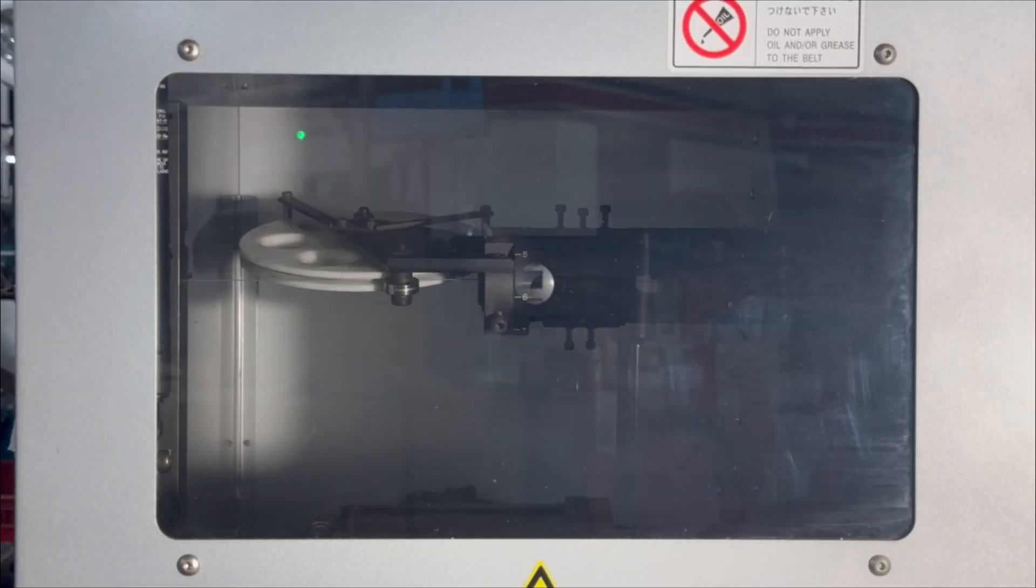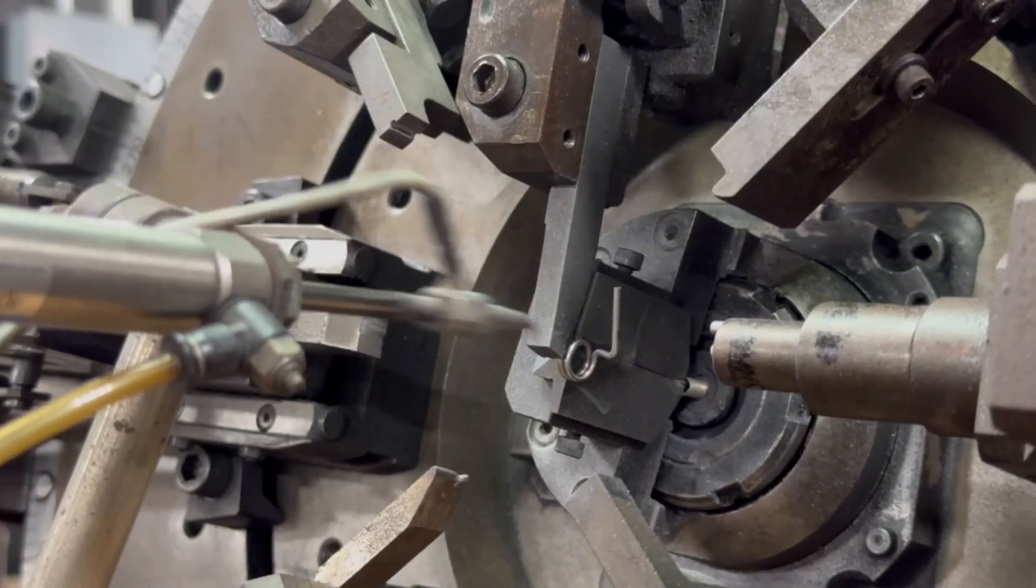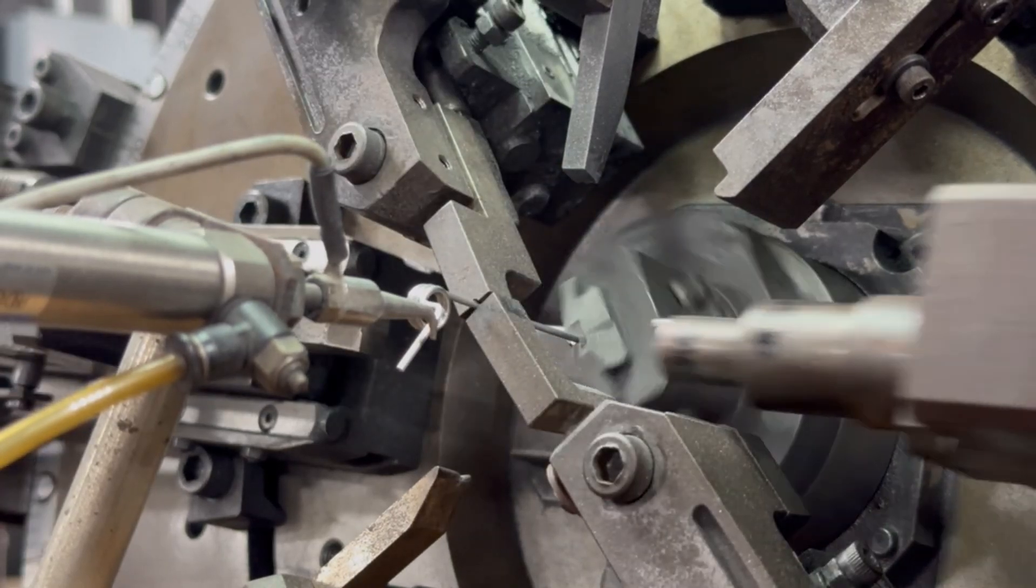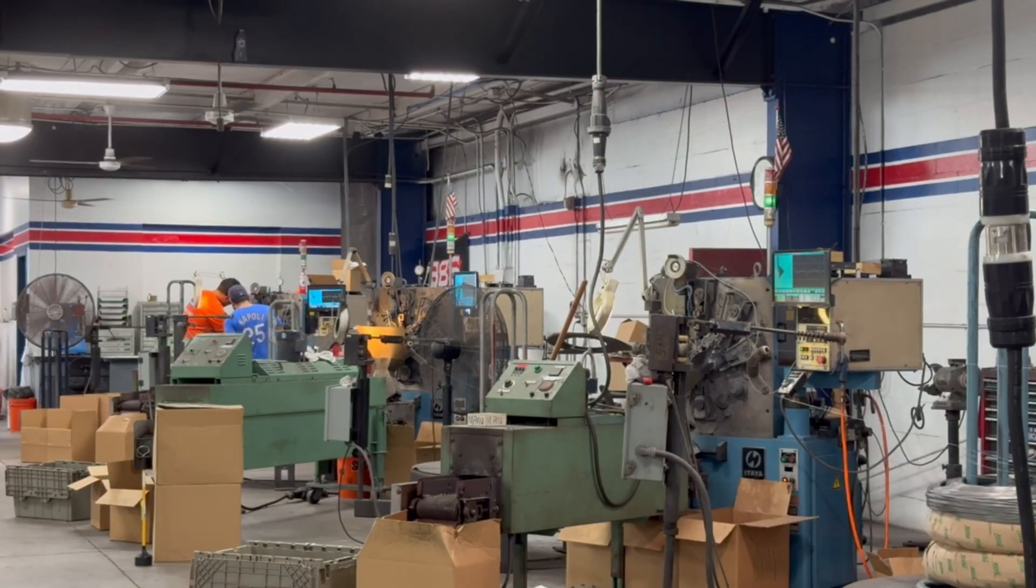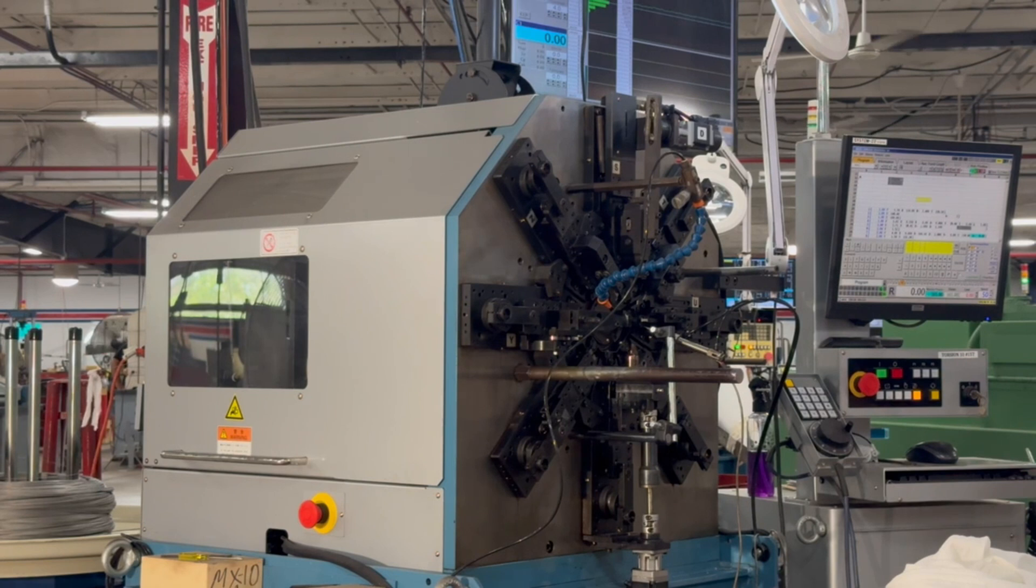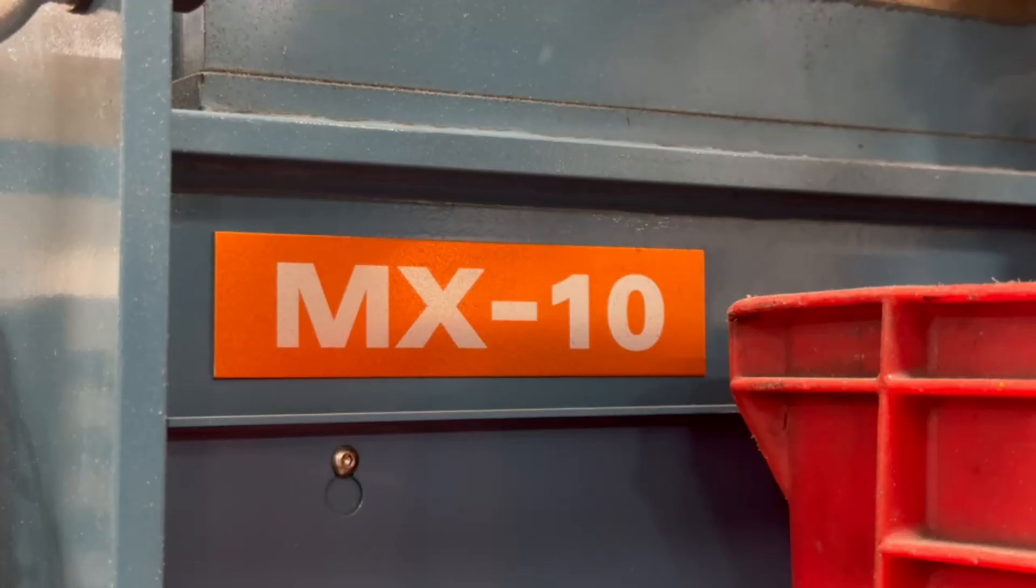With such a wide array of applications, torsion springs come in various shapes and sizes and are made on a myriad of different machines. The machine we'll be taking a look at today is an ITEA MX-10.